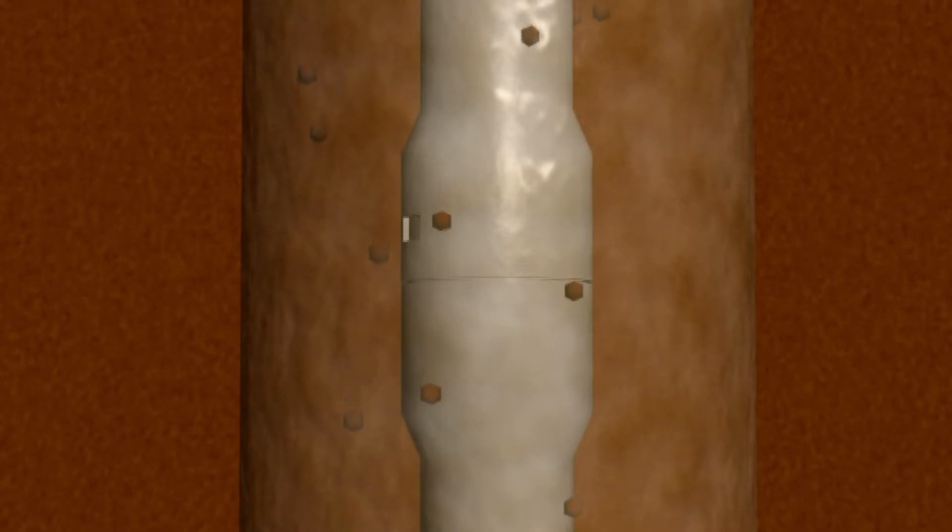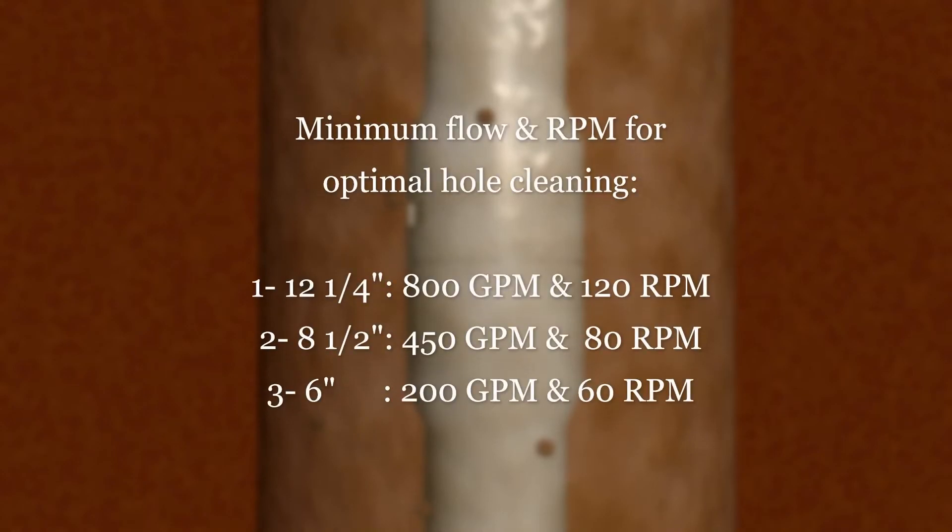Typical minimum flow and rotation required as per different hole sizes are 800 gallons per minute and 120 revolutions per minute for 12.25 inches, 450 GPM and 80 RPM for 8.5 inches, 200 GPM and 60 RPM for 6 inches.